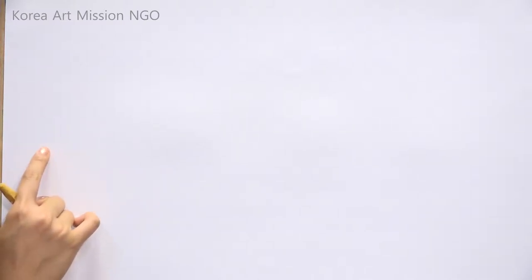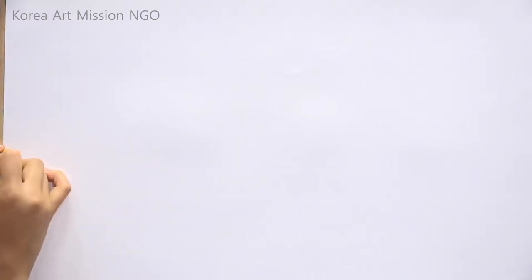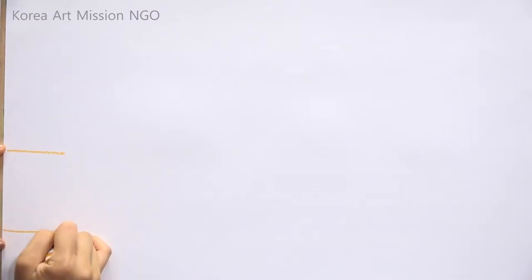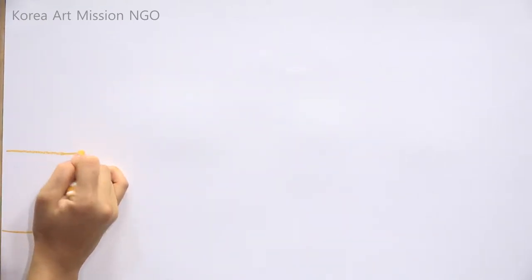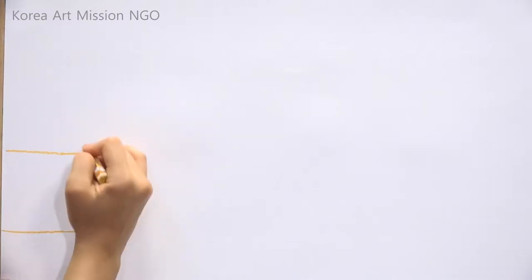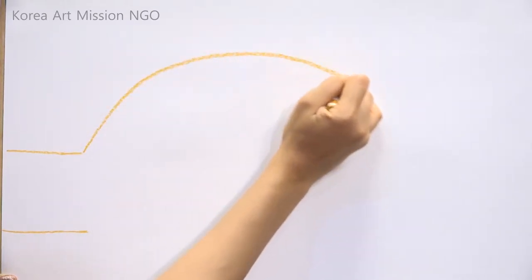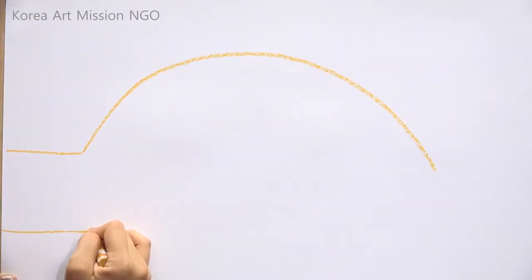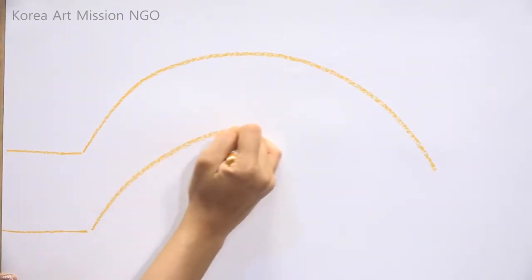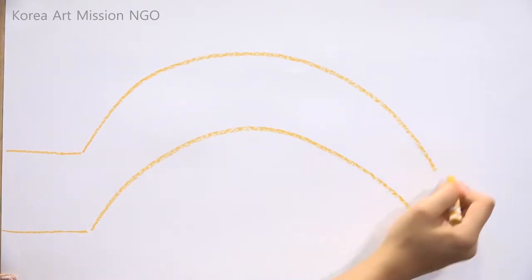Shall we draw a rainbow bridge today? First, I will try to draw the road at the end of the paper and then draw the rainbow bridge upwards, convexly. Draw this way up, and let's draw a path to this side too.